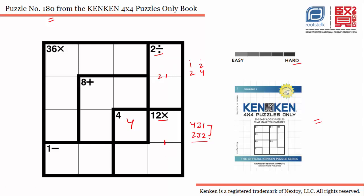That means 2 is definitely in these two cells, which means we can't use 2 in the other two cells. This eliminates the 2×3×2 combination — we can call it an impossible combination. We can't use this option without putting 2 in this cell, so this is out.